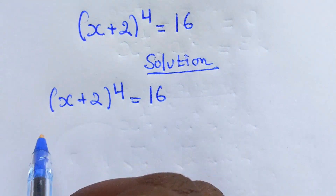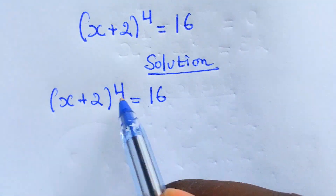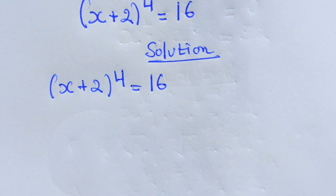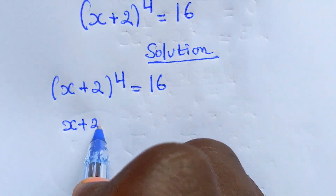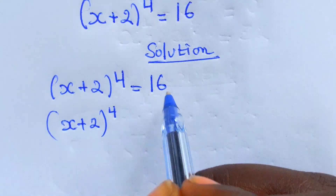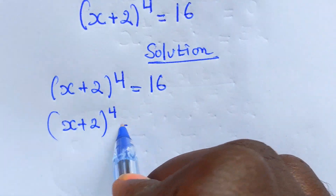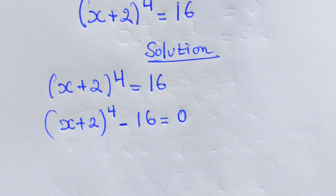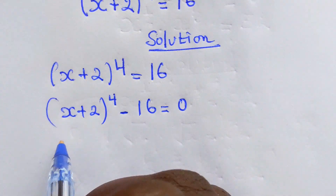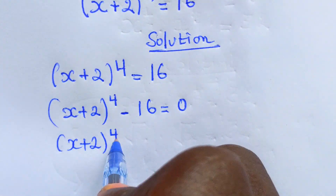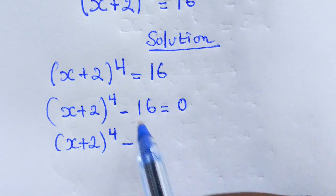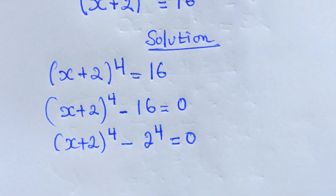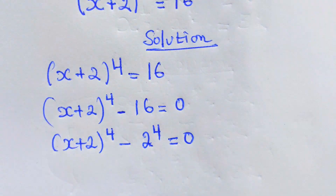We are supposed to find four values of x. At this stage we have to take x plus 2 to the power 4, move the 16 across the equal sign, and get x plus 2 to the power 4 minus 16 equal to zero. Now we are going to change this 16 into base 2 to get 2 to the power 4, so the expression becomes equal to zero.